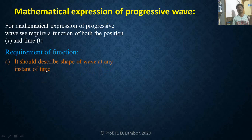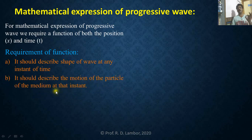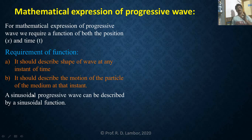The first requirement is that the function should describe the shape of the wave at any instant of time. The function must be a function of both position and time. The second requirement is that the function should describe the motion of the particles of the medium at that instant. Both these requirements are fulfilled by the sinusoidal function, so a sinusoidal progressive wave can be described by a sinusoidal function.